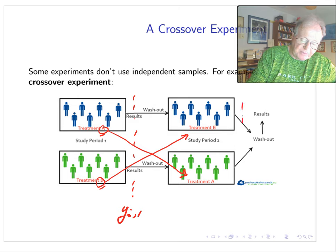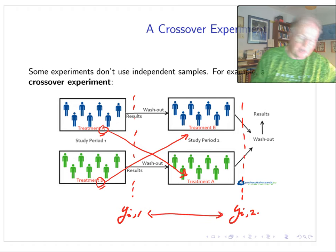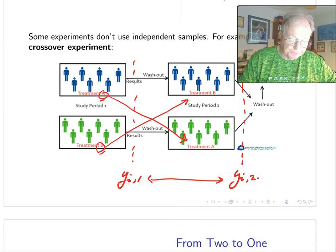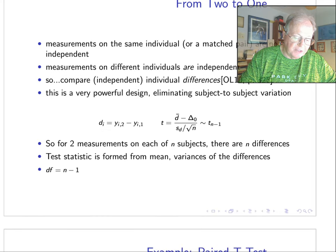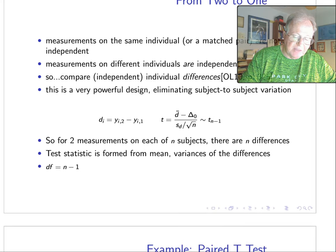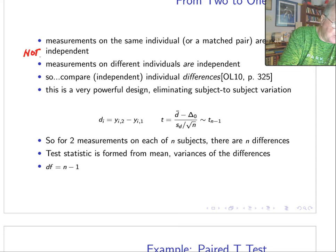So treatment B is now assigned to the group that had A, and treatment A is now assigned to the group that had B. We go through another period, we take our separate measurement, and so now we have, for each individual i, we have measurement number two. Okay, and then what we're going to do is we're going to do some kind of comparison involving these. How does that work? Well, measurements on the same individual—different individuals are not independent—not, I have to reiterate that, not independent—but measurements on different individuals are independent.